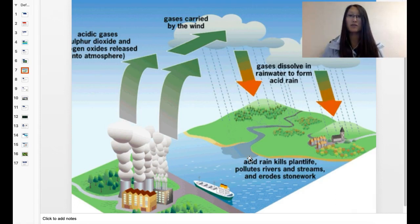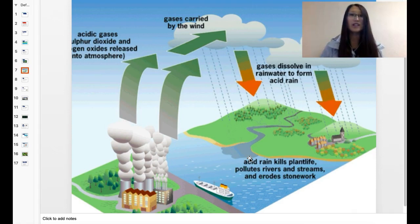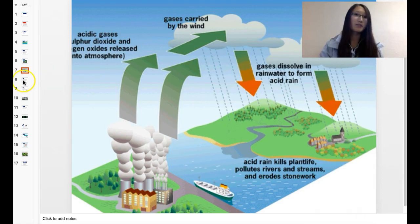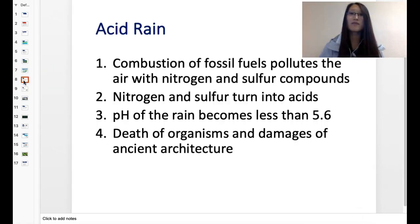And how is acid rain affecting us humans? We have a lot of architecture — our cars, our buildings, our sculptures — all of those can be damaged by acid rain as well. So why should you care? Maybe in the future, if you can afford it, you can use some clean energy and just help a little bit. Whatever you could do.